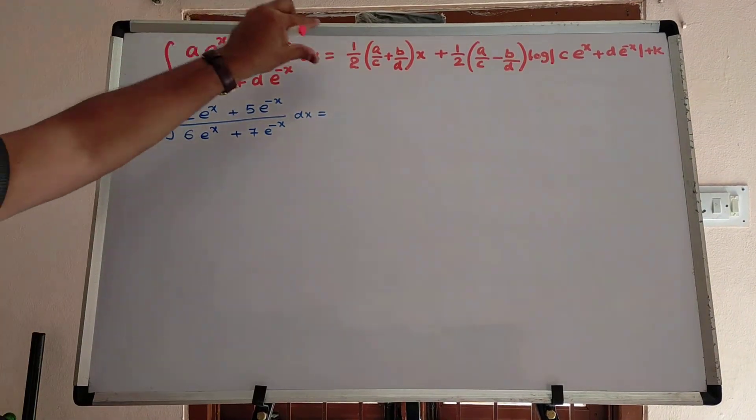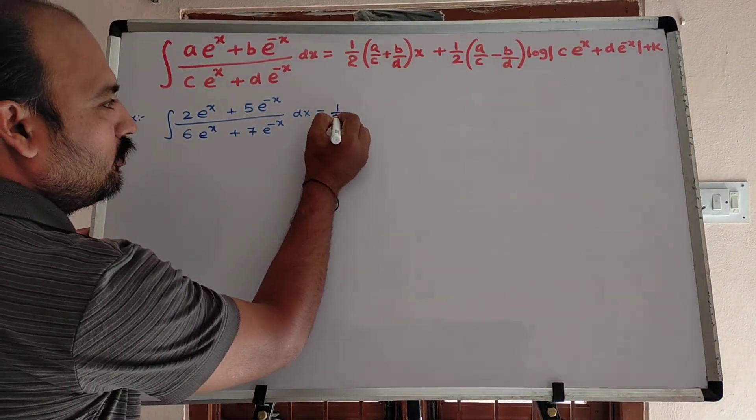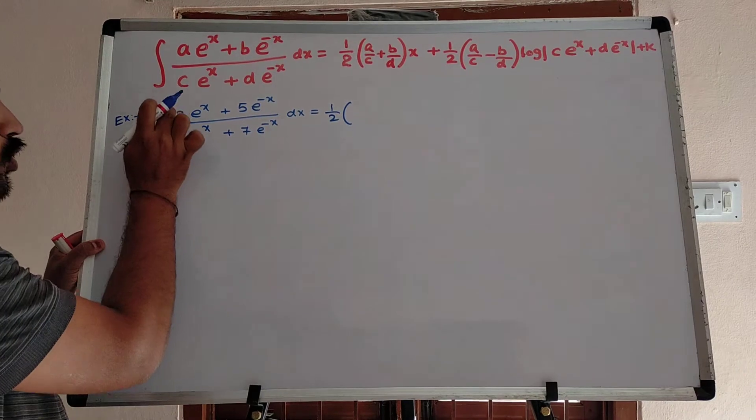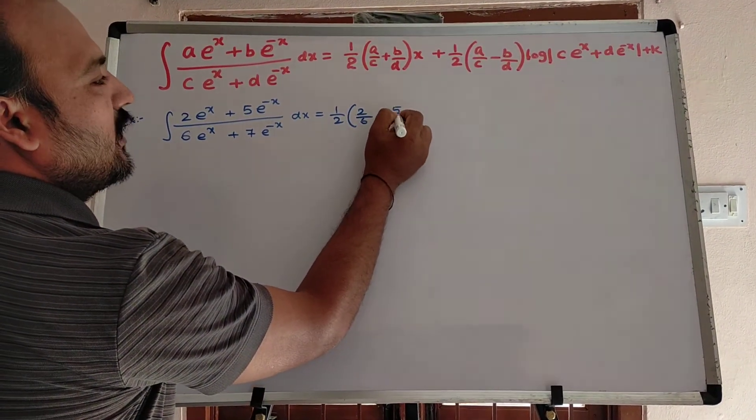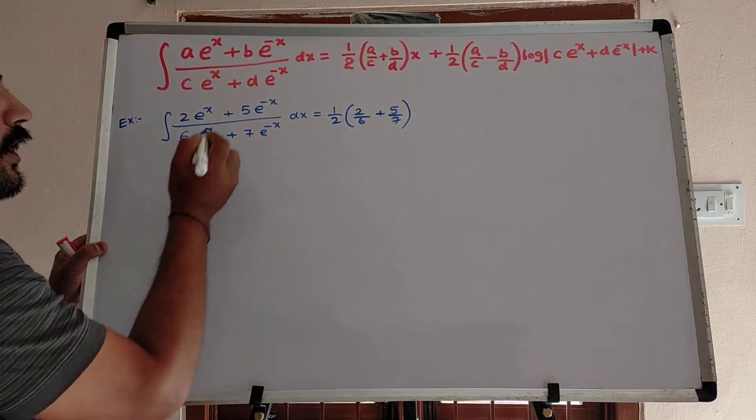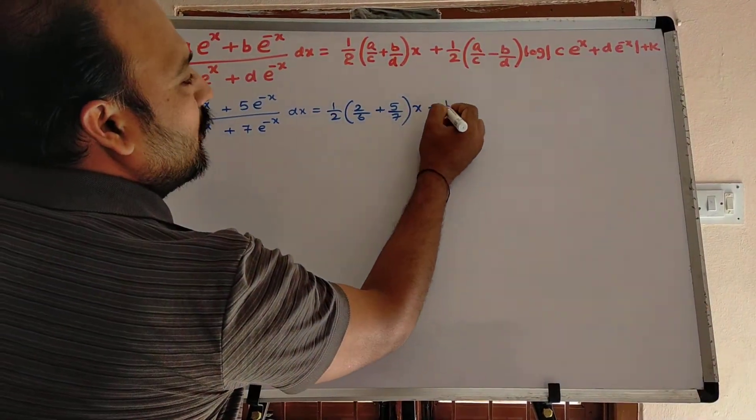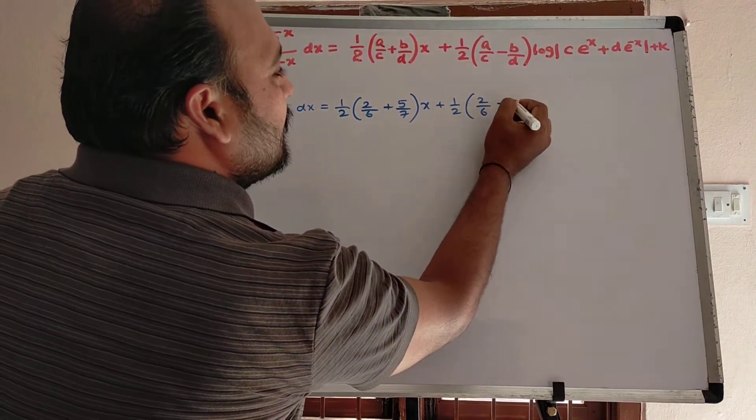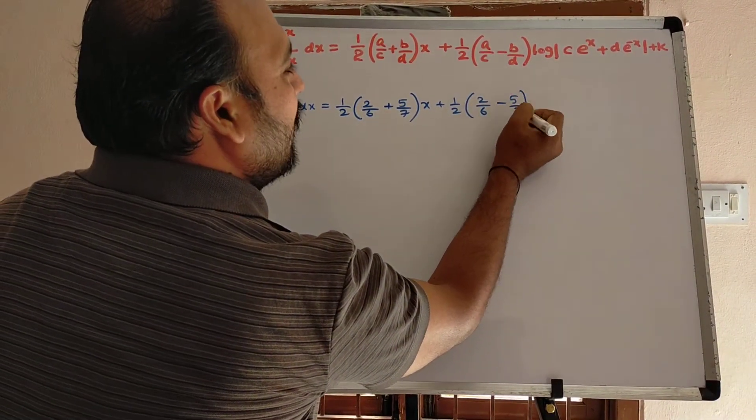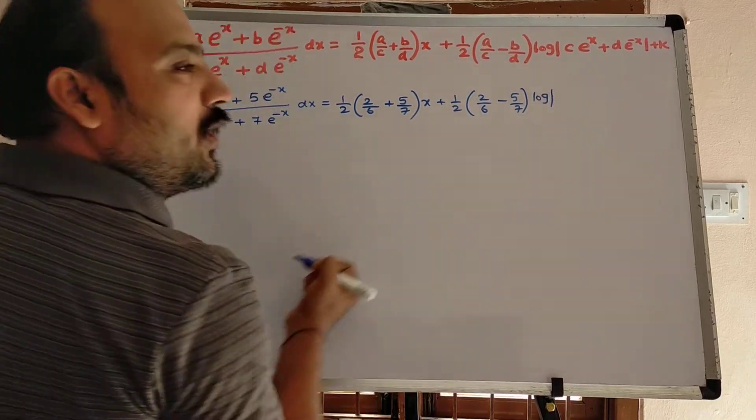According to the shortcut formula, half into 2 by 6 plus 5 by 7 into x plus 1 by 2, same value. 2 by 6 minus 5 by 7 into log mod denominator, 6 e power x plus 7 e power minus x plus k.